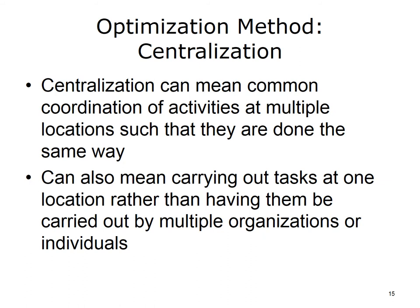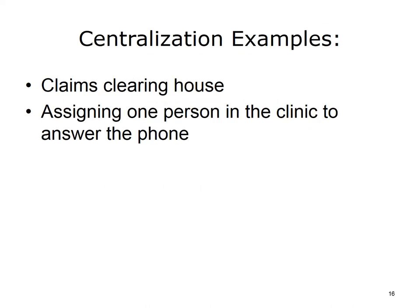Centralization can mean common coordination of activities at multiple locations such that they are done the same way. It can also mean carrying out tasks at one location rather than having them carried out by multiple organizations or individuals. Using a claims clearinghouse is often more efficient for a practice than submitting claims to multiple insurance companies. Assigning one person in the clinic to answer the phone or one person to handle prescription refill requests are also examples of centralization that may increase efficiency.